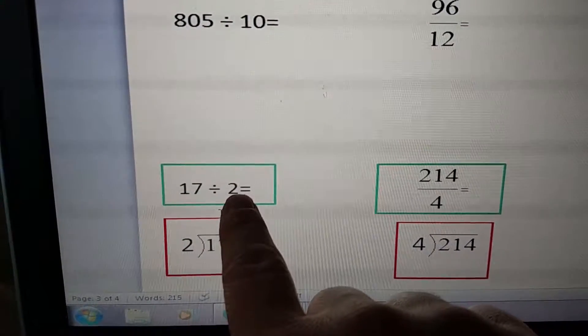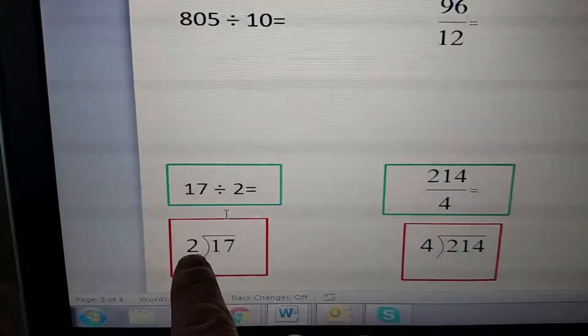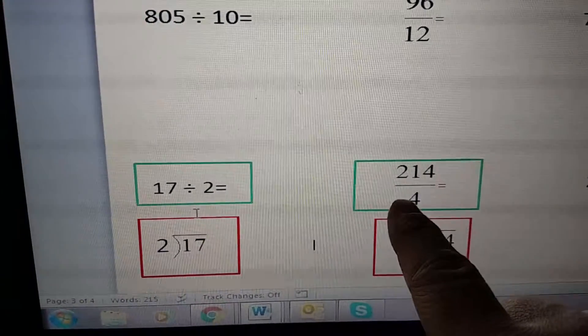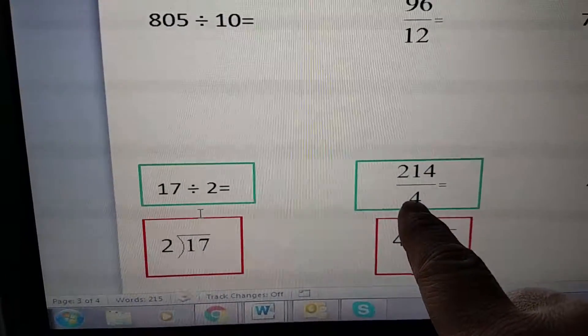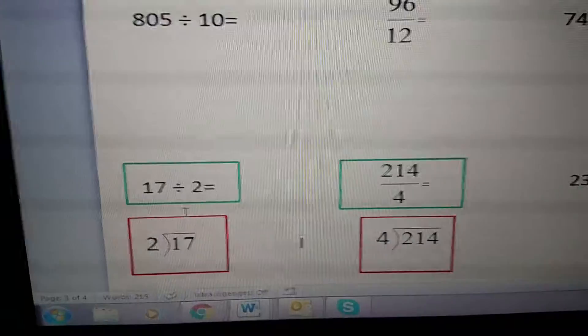So the divisor was the second number of my sequence, and when I do long division, it's my outside number. Here, my divisor was the bottom number in my fraction, and again, my divisor goes on the outside of my long division bar.